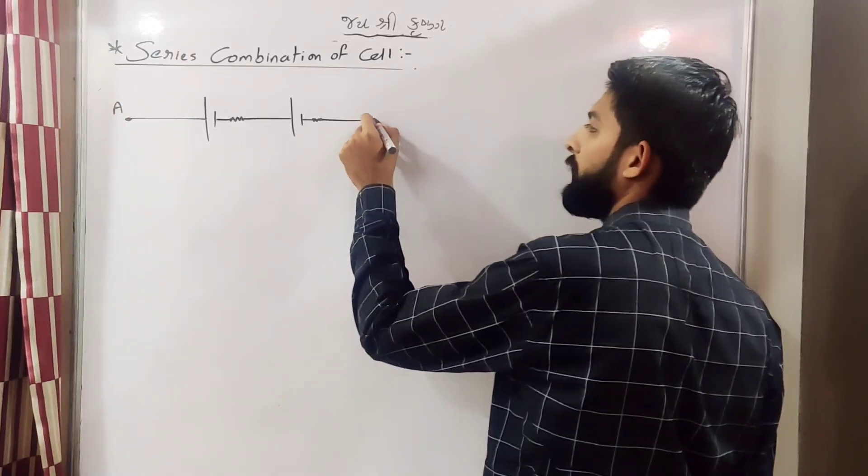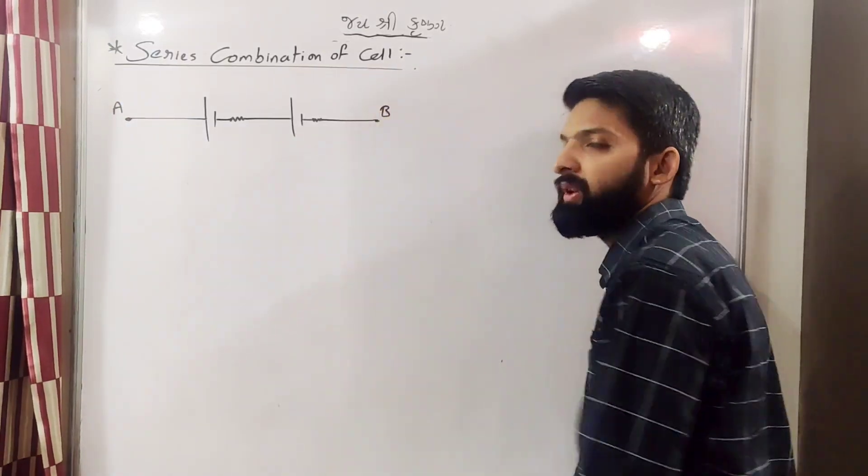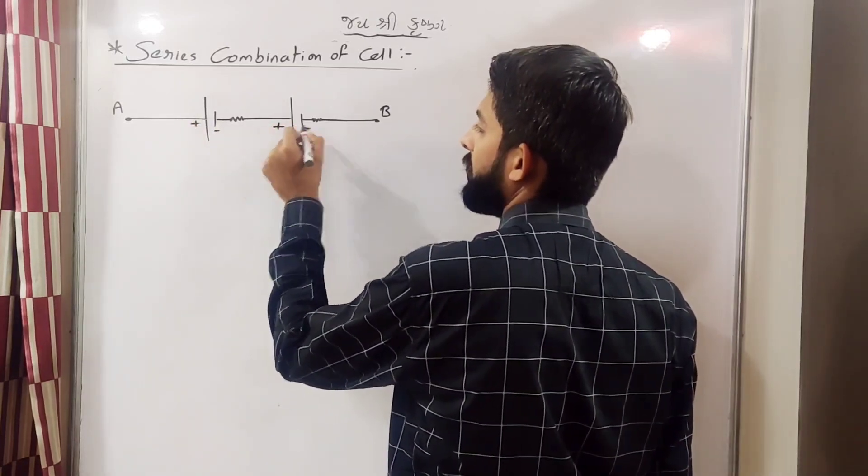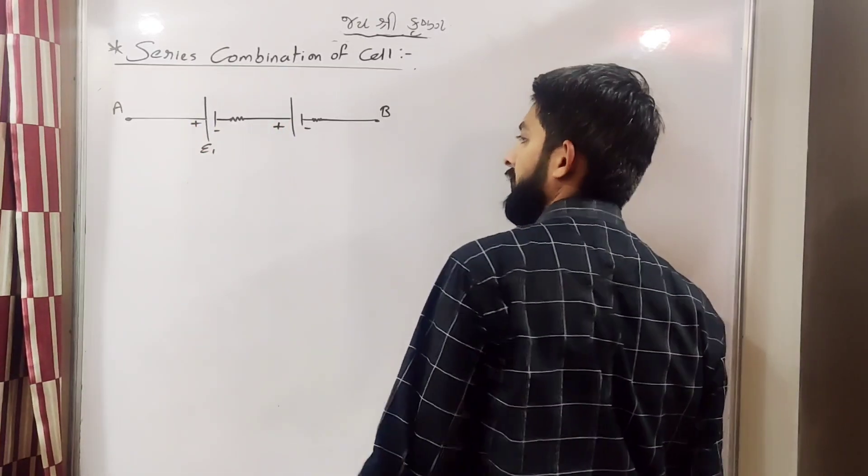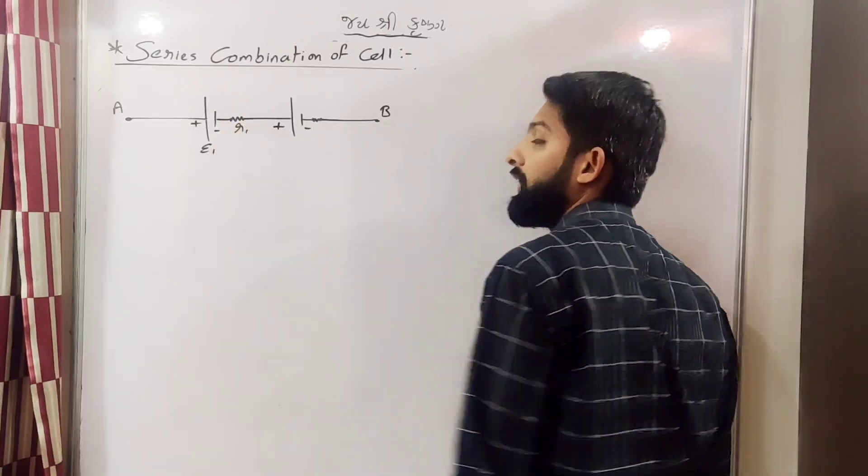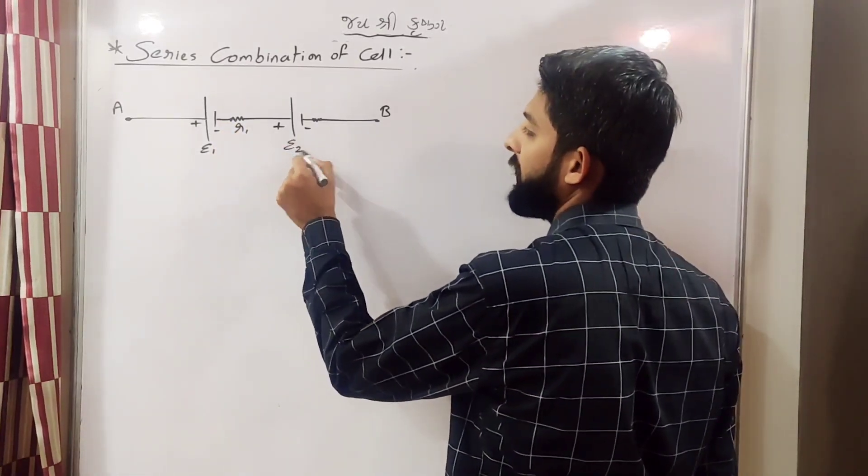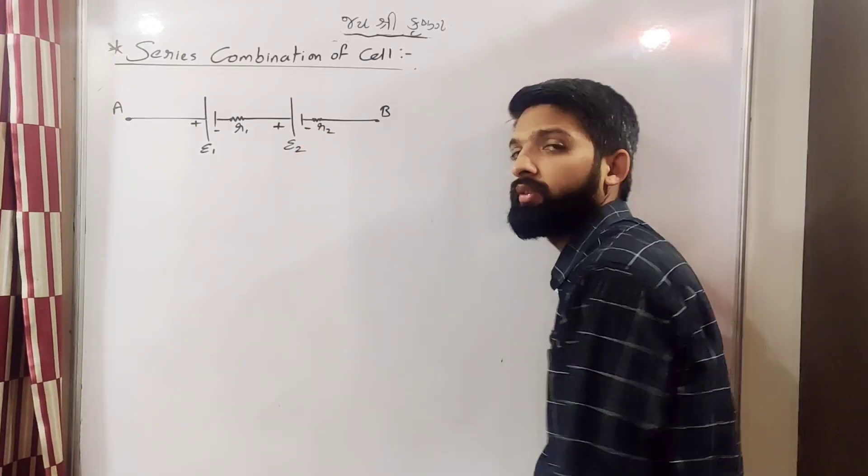Let's say this is A point and this is B point. Iska jo emf hai woh epsilon 1 hai, iska internal resistance hai woh r1 hai. Iska emf hai woh epsilon 2 hai aur internal resistance r2 hai.